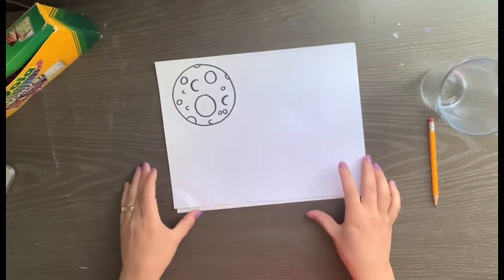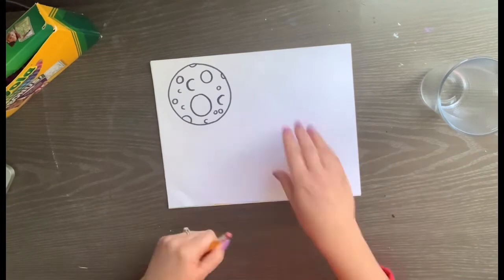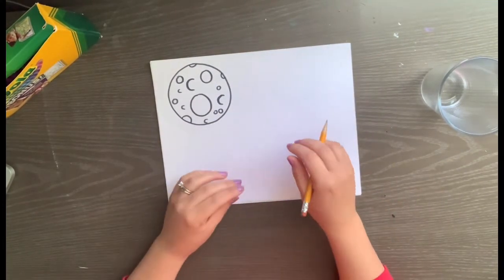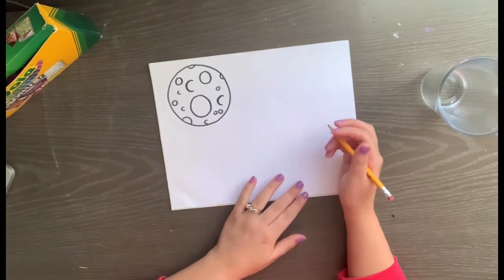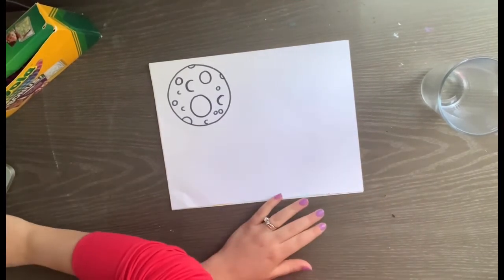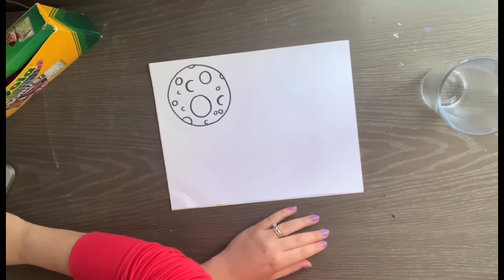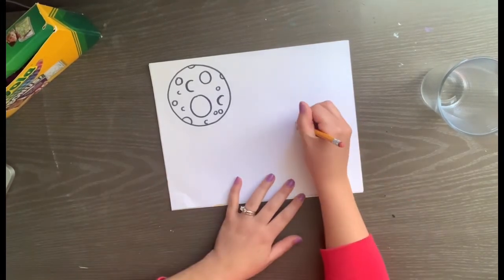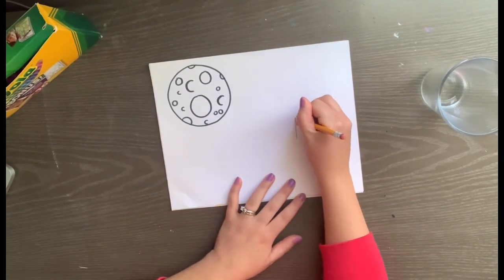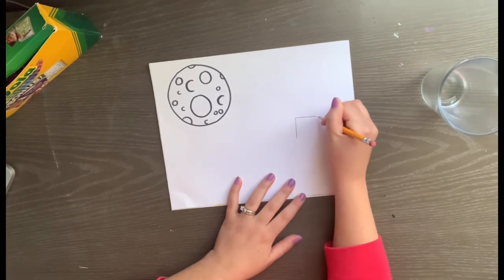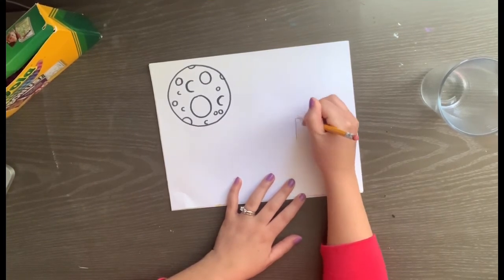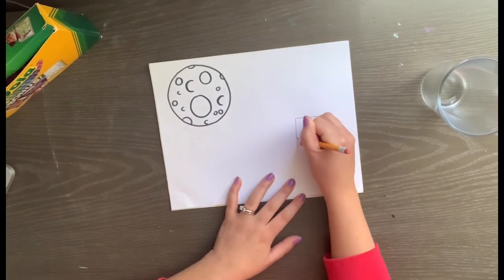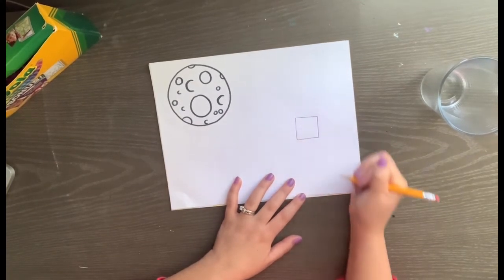Now I'm ready to draw some of my bats. You can put as many bats on your page as you would like and you can use the worksheet with the faces to make your bats unique for you. To start my bat, I am going to start with a square just like this. When I draw squares, I start with the vertical line, horizontal, vertical, horizontal, just like that.